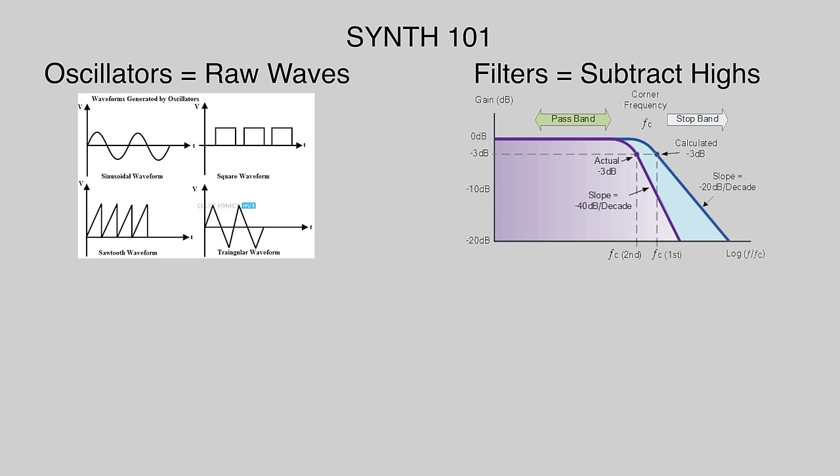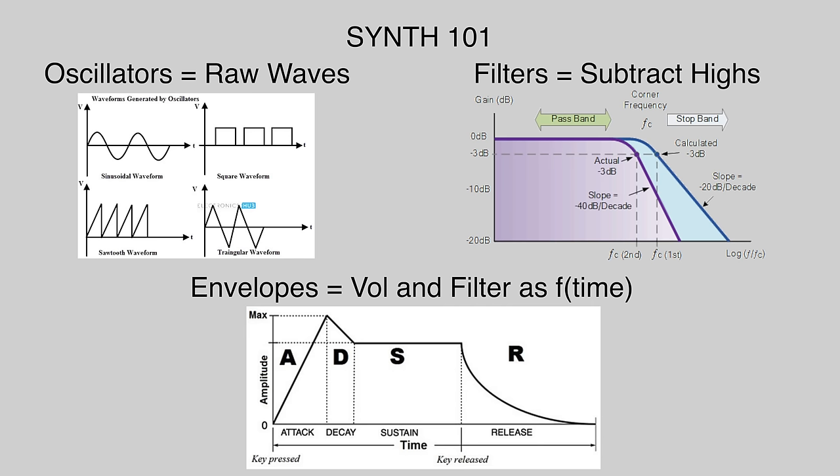The sound then incorporates two different envelopes, which are time functions based on when you press and release a key. They are the amplifier envelope, which determines how the volume of the sound changes over time, and the filter envelope, which determines how the cutoff frequency for the filter moves over time. An envelope consists of four values which describe this movement. The attack is how gradually a sound fades in or a filter sweeps up and down.